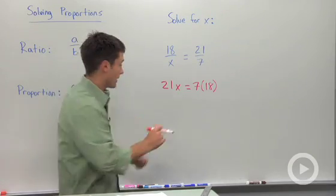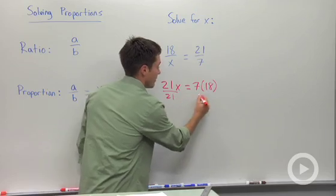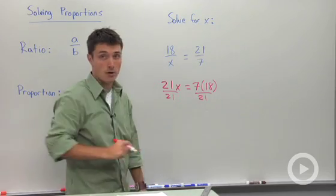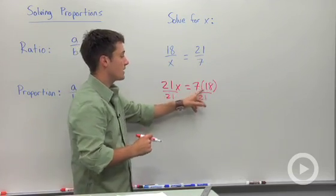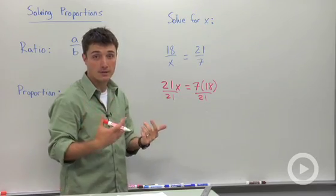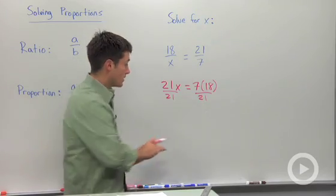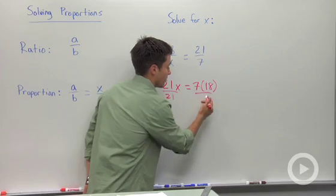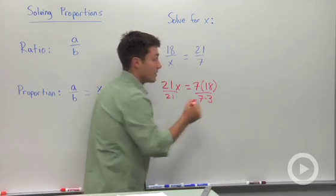So to solve this for x, we're going to divide both sides by 21. Now notice that I didn't multiply 7 times 18. I'm going to use factors to simplify here. So I'm going to write 21 as the product of 7 times 3.